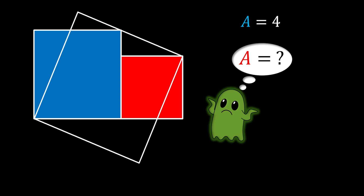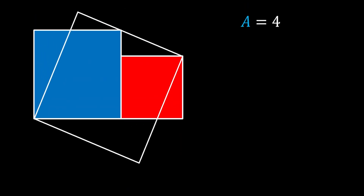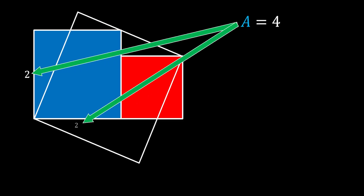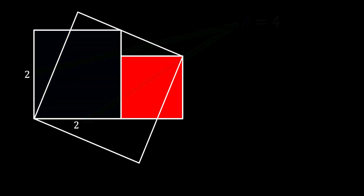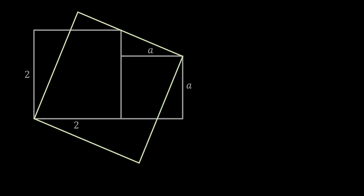I will offer you two different methods to solve this problem. The first method will be using triangle similarity. Let's start with the fact that the area of the blue square is equal to 4, which means we can easily calculate the sides of this square as 2. Next we can mark the sides of our small red square as A, and the sides of our tilted square as B.